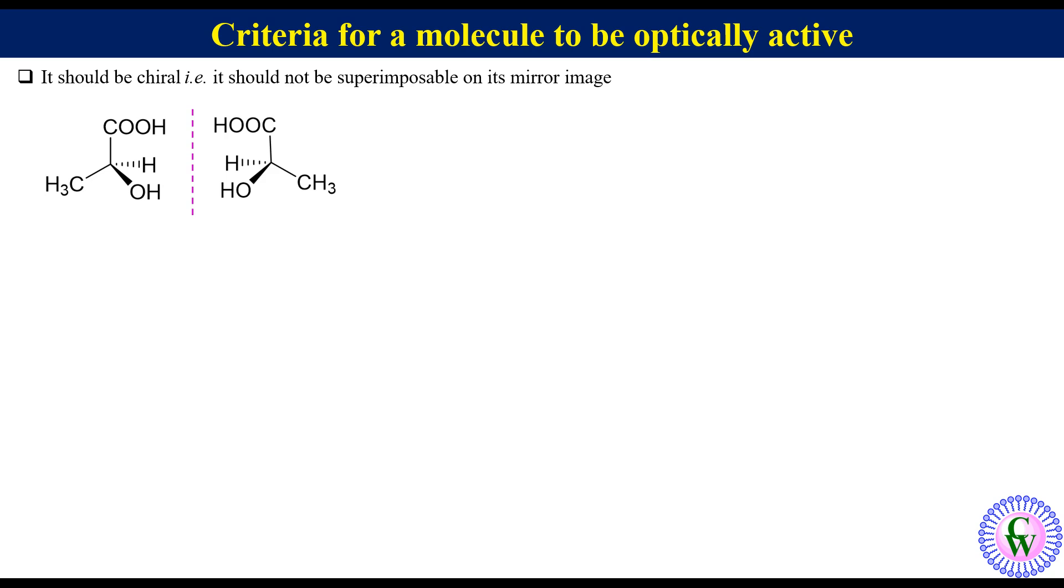Non-superimposable on its mirror image means if we put the mirror image of a molecule over it, it doesn't completely cover it. In this case, if we put the mirror image over the original molecule, we can see that these are non-superimposable. Therefore, lactic acid is a chiral molecule.